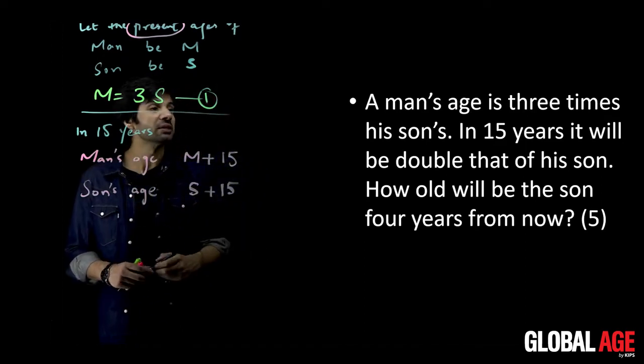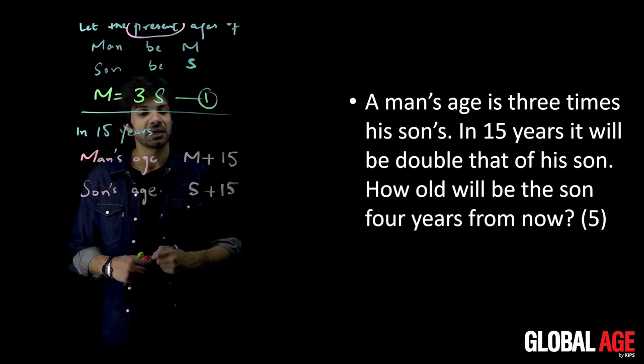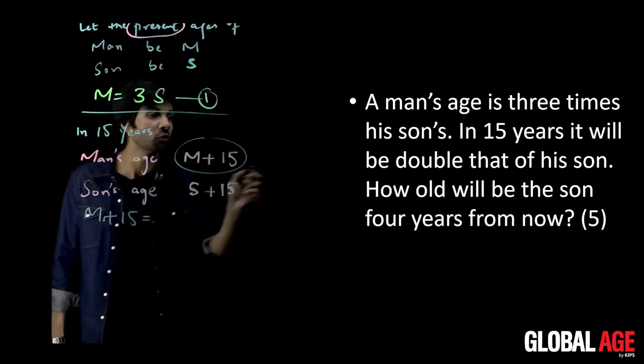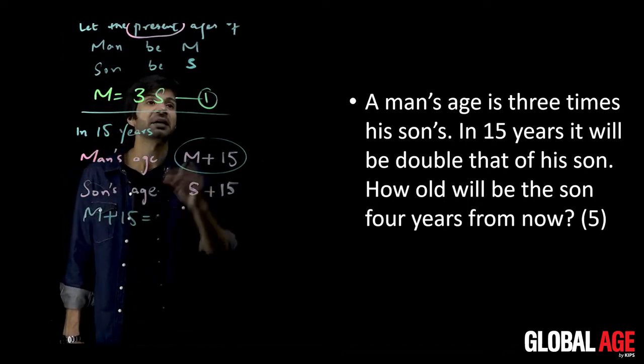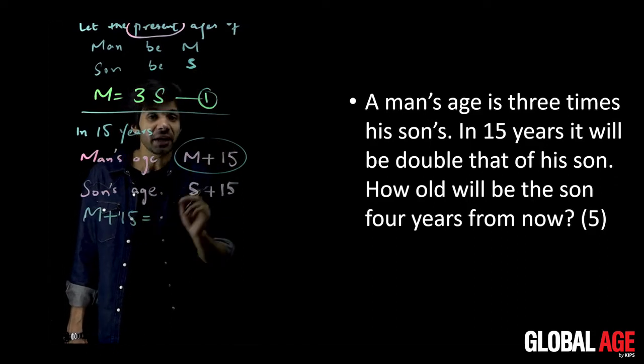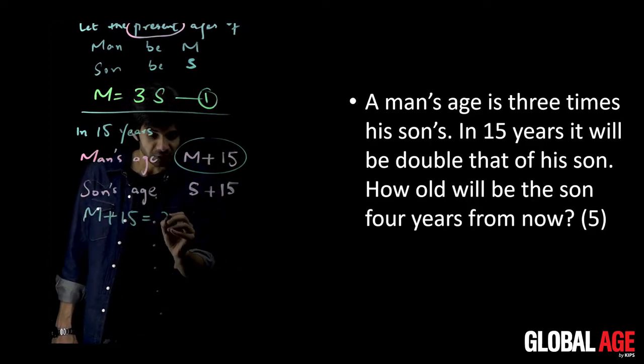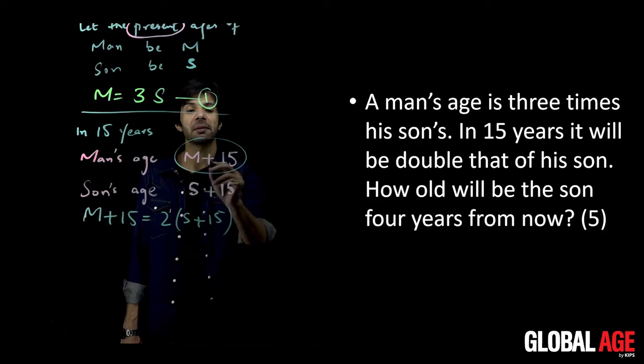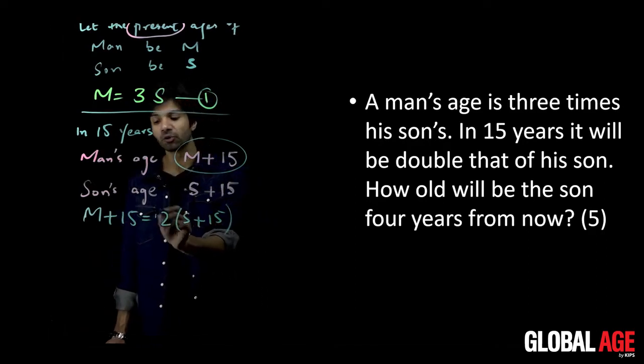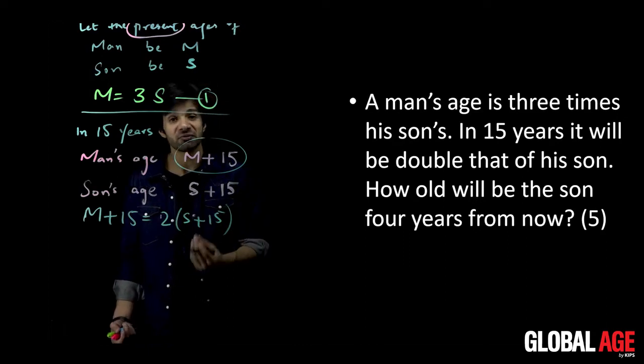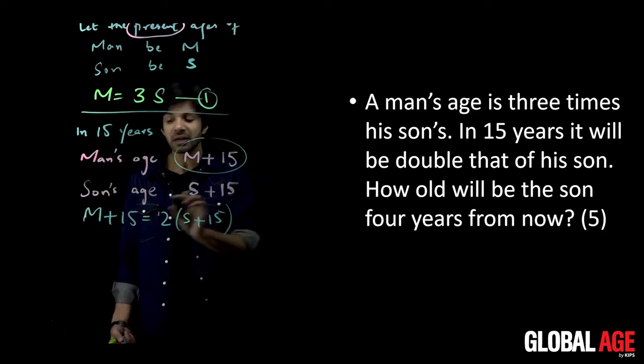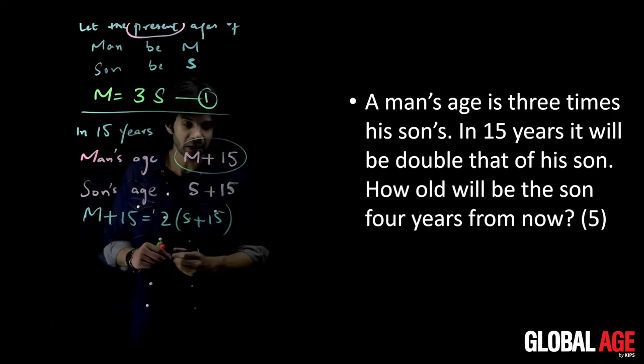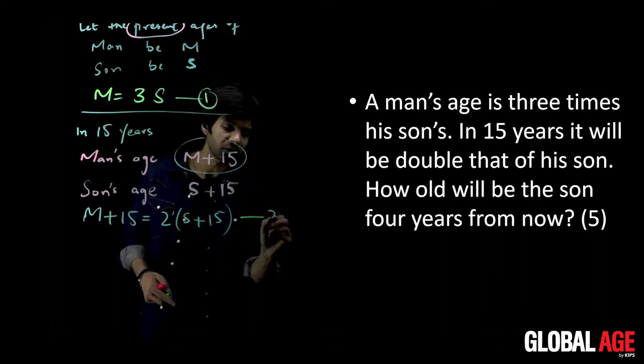Now, he is saying in 15 years, the man's age will be double that of his son. So 15 years after, the present age will be M plus 15, and M plus 15 will be double that of his son. So double that of his son - son's age 15 years after S plus 15. Son's age is double, twice, which is equal to man's age. That's your equation number 2.